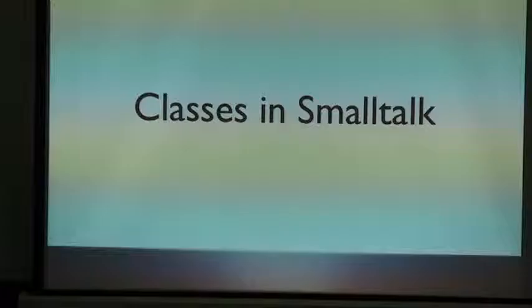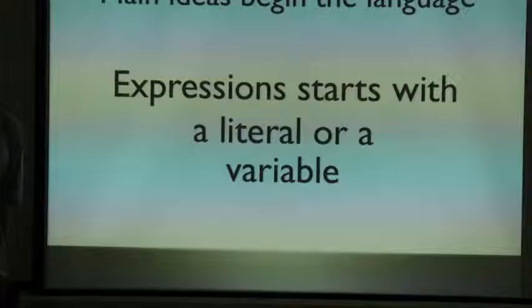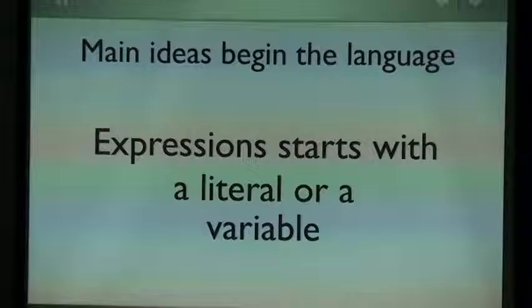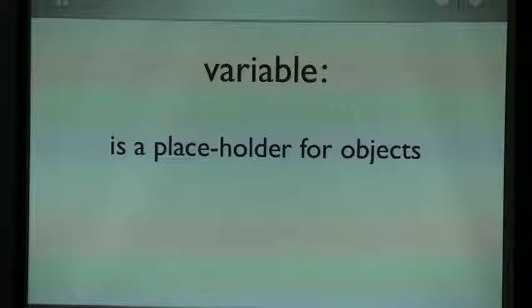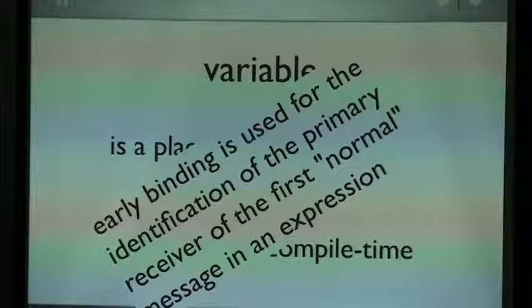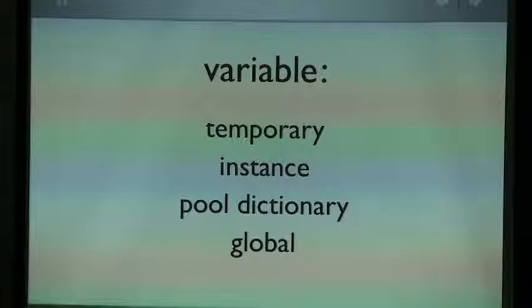We'll talk about environments. The first idea is we need to think about the classes in a Smalltalk environment. What is an expression? We need to think how we start an expression in Smalltalk. This needs to be a literal or a variable. A variable is a placeholder for the object, and it's assigned at compile time. For understanding the rest of the presentation: early binding is used.